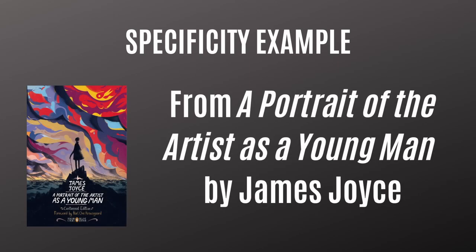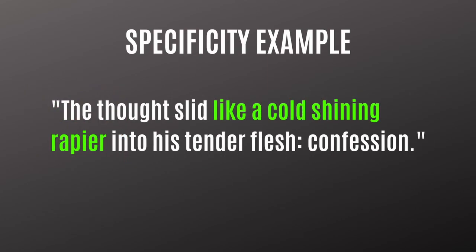Now an example focusing on specificity, from A Portrait of the Artist as a Young Man by James Joyce. One simile in this book really leaped out at me: 'The thought slid like a cold shining rapier into his tender flesh. Confession.' That simile — 'like a cold shining rapier into his tender flesh' — you can really feel it because of how specific it is. A rapier is a sword with a very thin blade used to pierce flesh. You could have written 'like a sword into his flesh,' and that would have worked, but the specific details — a cold shining rapier into his tender flesh — make it so striking.